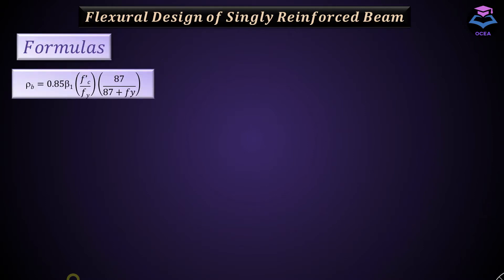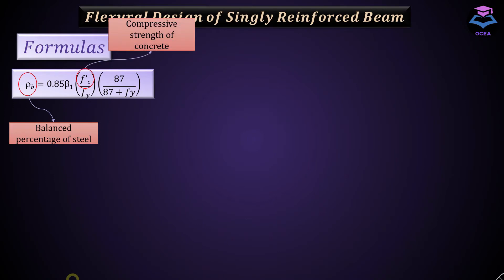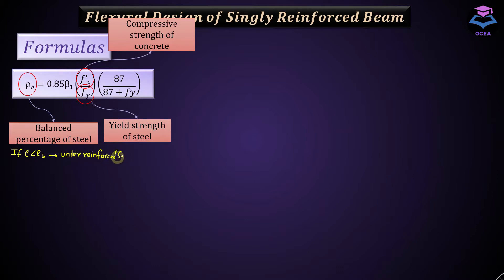This equation is used to calculate the balanced percentage of steel. The percentage of steel which causes steel to yield at the same time as the concrete crushes is called the balanced steel ratio or balanced percentage of steel. FC' is the compressive strength of concrete and FY is the yield strength of steel. Beta1 is a factor that depends on the value of FC'. If the actual percentage of steel used in the section is less than the balanced percentage of steel, the section will be under-reinforced. Whereas if greater, the section would be over-reinforced and fail in a brittle manner.